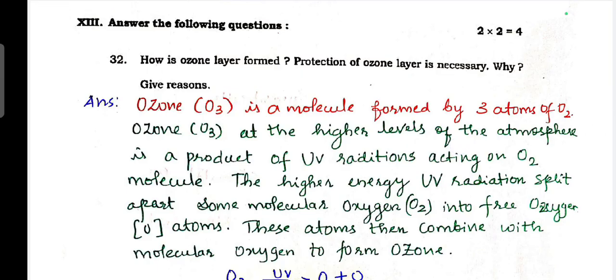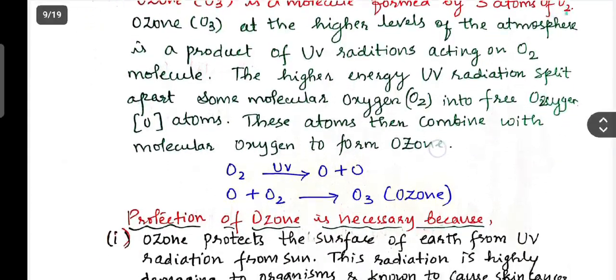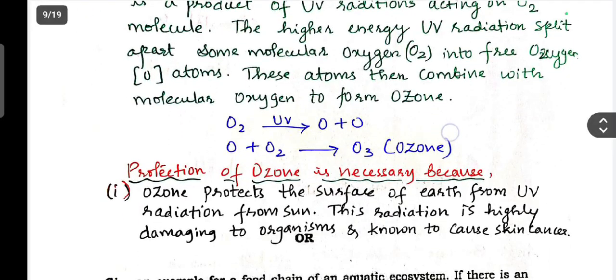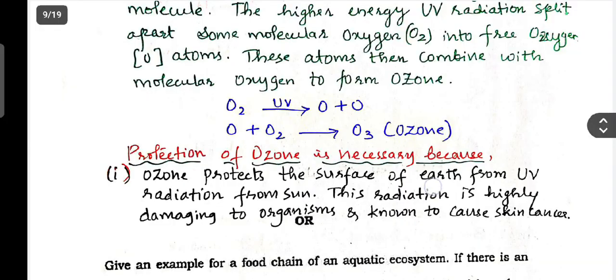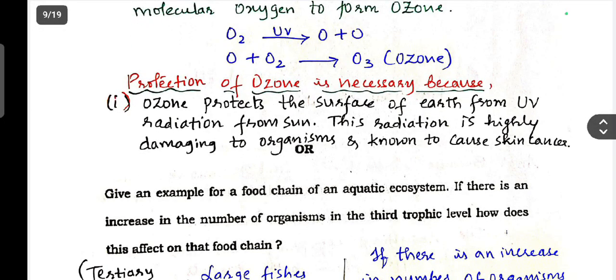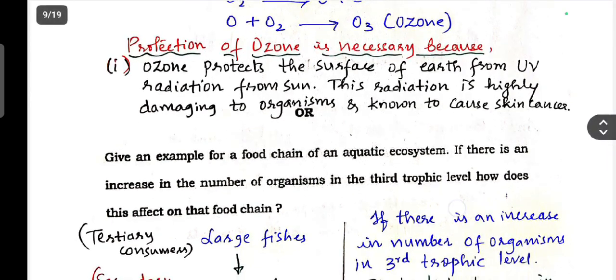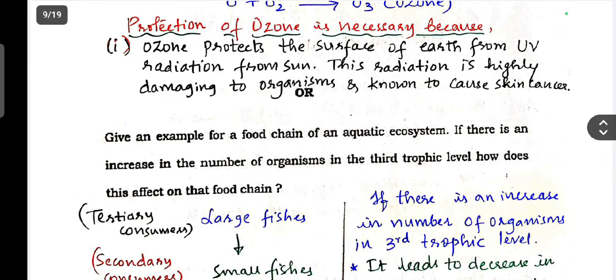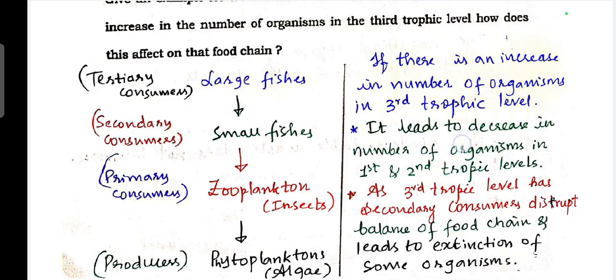Next, two mark question. How is ozone layer formed? Protection of ozone layer is necessary, why? Give reason. Protection of ozone layer is necessary because - this is the answer. Next question also there. Give an example for food chain of an aquatic ecosystem. If there is an increase in the number of organisms in the third trophic level, how does this affect that food chain? So this is the answer.